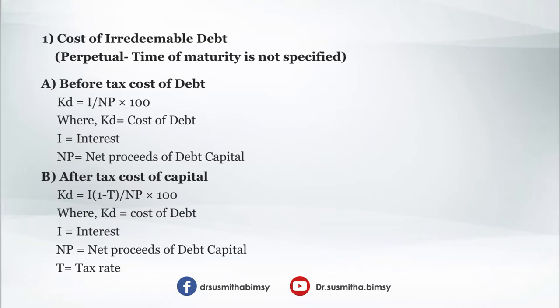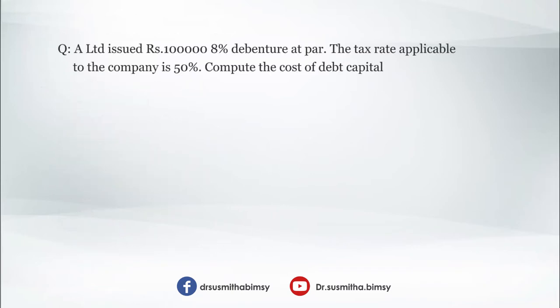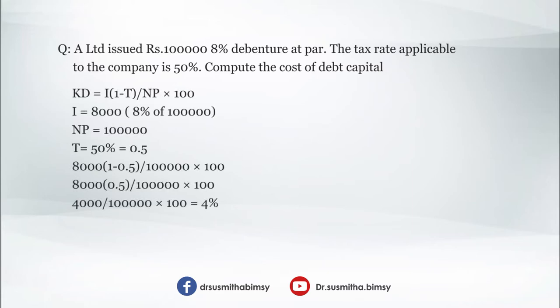The only difference from the first formula is that you add (1 − t) in the numerator. First problem: A Limited issued rupees 1 lakh 8% debentures at par; the tax rate is 50%. Compute the cost of debt capital. Using Kd = I × (1 − t) / NP × 100: I = 8% of 1 lakh = 8,000; NP = 1 lakh; t = 0.5. So: 8,000 × (1 − 0.5) / 1,00,000 × 100 = 8,000 × 0.5 / 1,00,000 × 100.